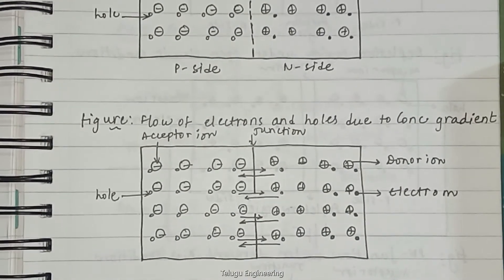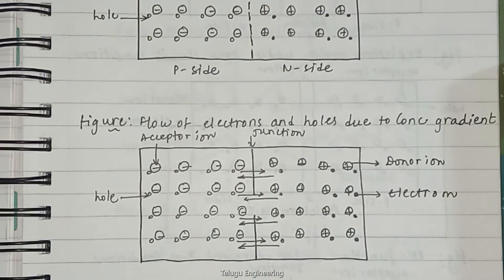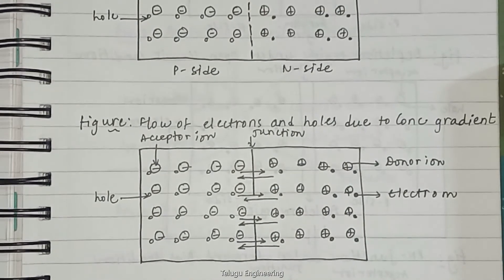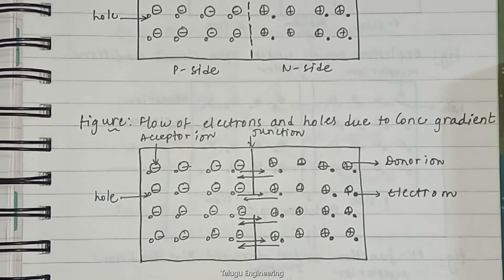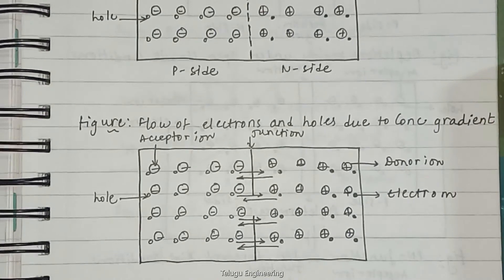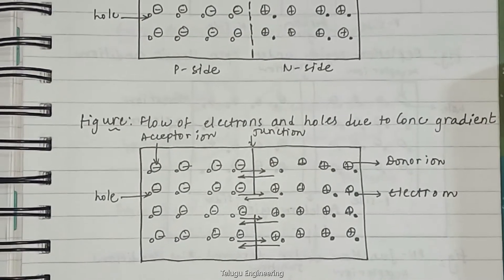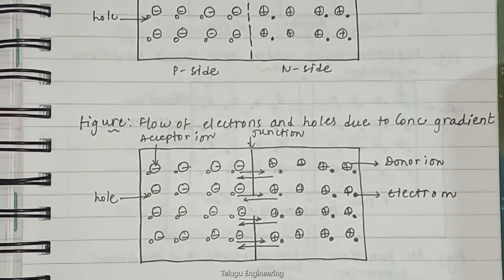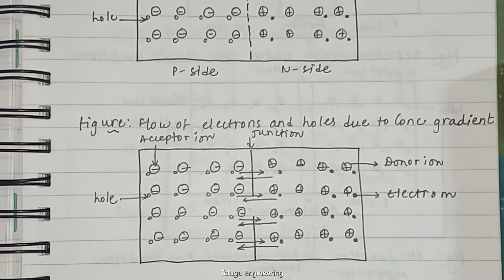During this flow of carriers, the holes get recombined by electrons and the electrons get recombined by holes. Because of the recombination of charge carriers, the acceptor and donor ions in P and N type regions become uncovered. That means there are no carriers along with ions as shown in the coming figure.